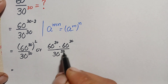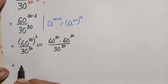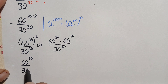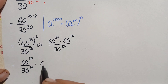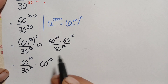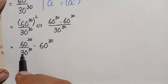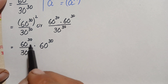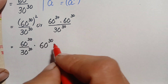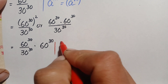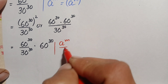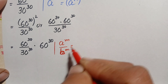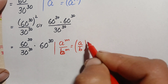We separate one term from the two, giving us 60 raised to power 30 divided by 30 raised to power 30, times 60 raised to power 30. Since the numerator and denominator have the same power, we apply the identity: a raised to power m divided by b raised to power m equals (a/b) raised to power m.